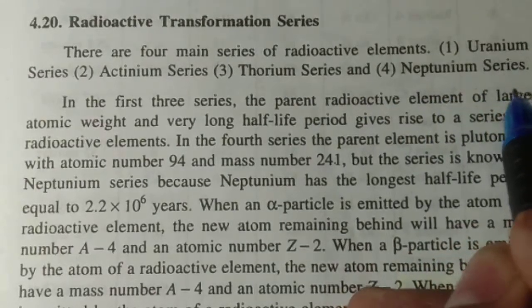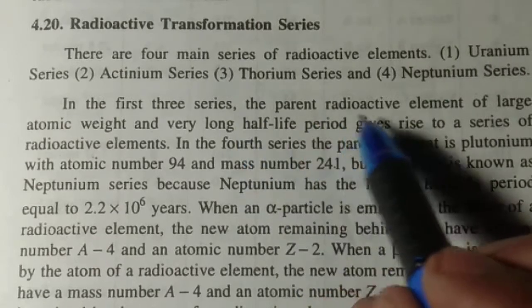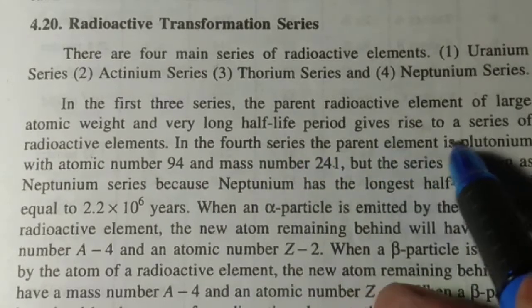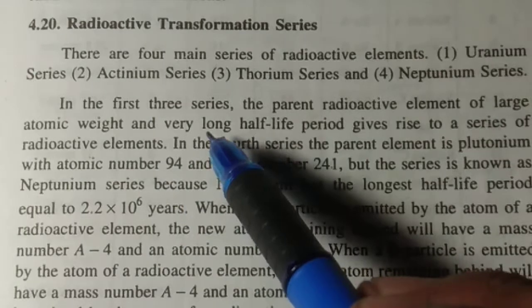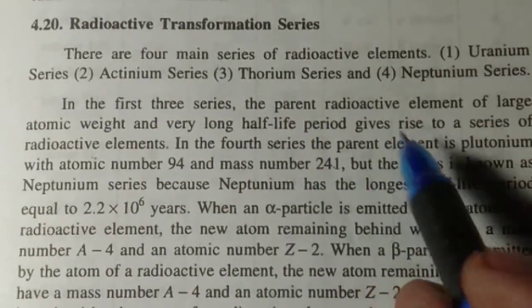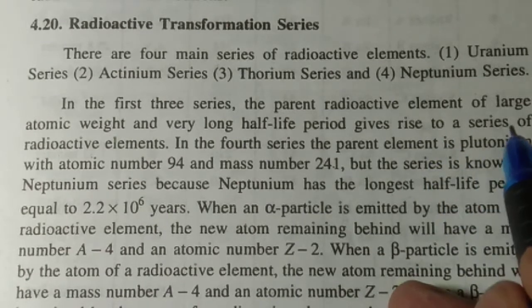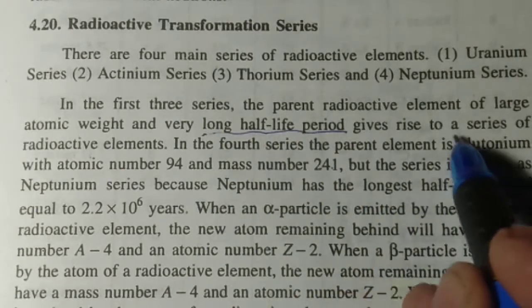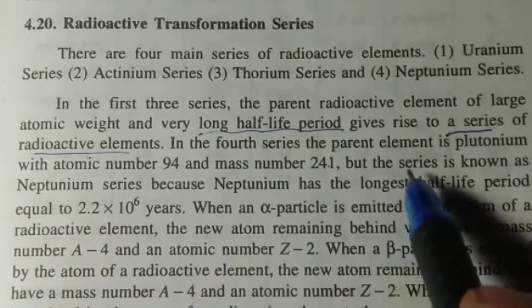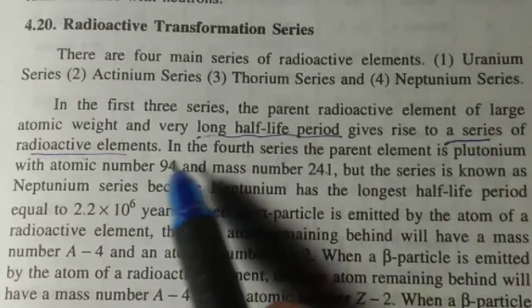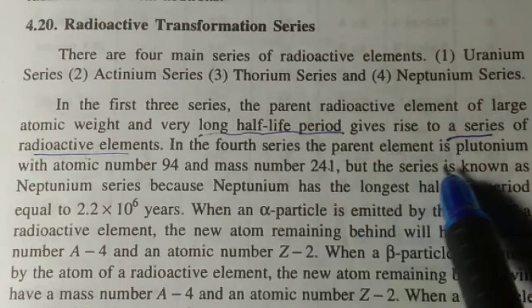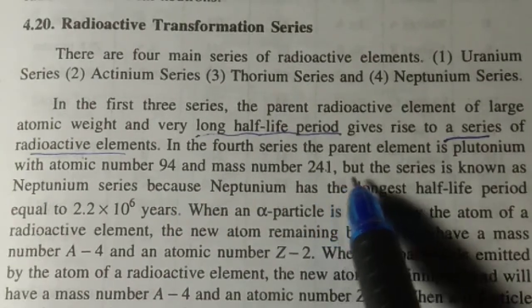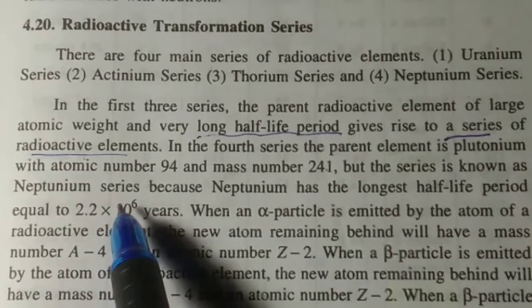In the first three series, the parent radioactive element of large atomic weight and very long half-life period gives rise to a series of radioactive elements. In the fourth series, the parent element is plutonium with atomic number 94 and mass number 241, but the series is known as neptunian series.